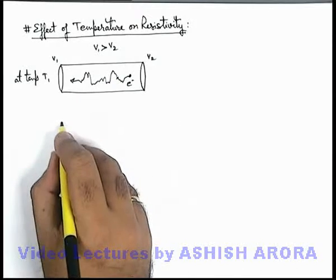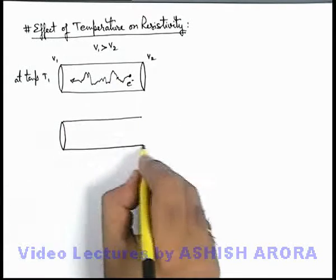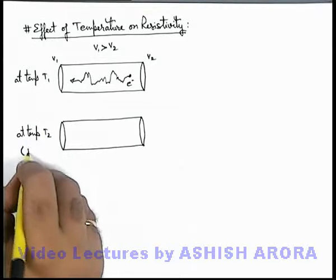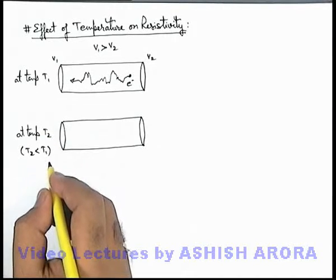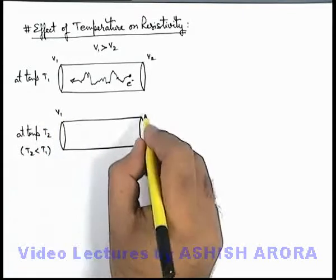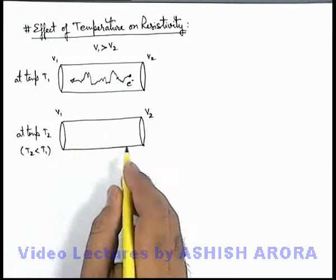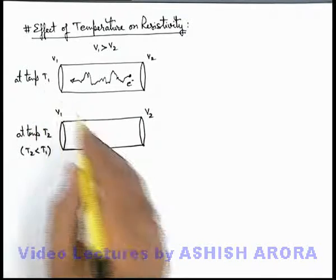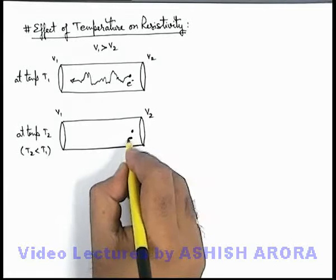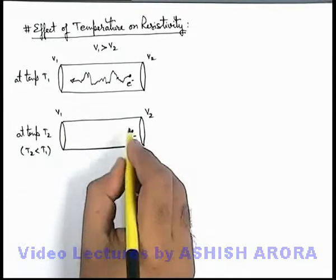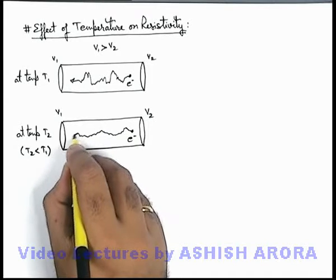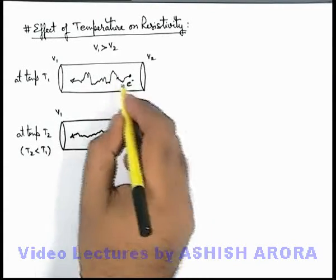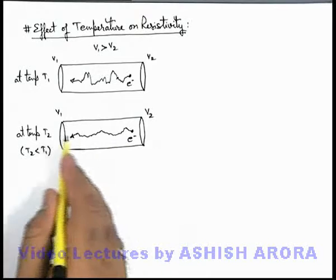Now if a similar situation is considered at a relatively lower temperature T2, where T2 is less than T1 — if the temperature is reduced, we know that the randomness of free electrons in the conductor will relatively decrease. So the number of collisions, or rate of collisions, between electrons will be less compared to that at temperature T1. The electron moving toward high potential will have relatively less randomness in its motion, because the rate of collision with neighboring electrons was more at T1 but is now less.